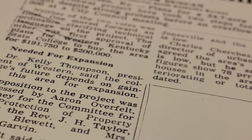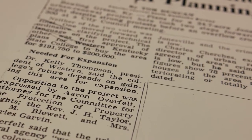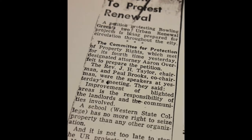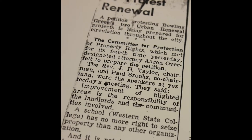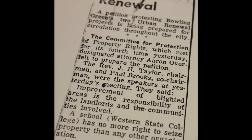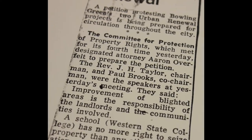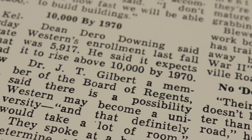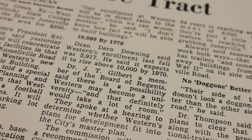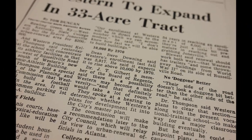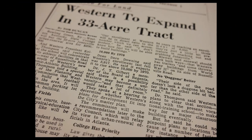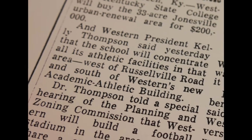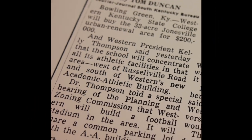On December 2, 1963, General Council gave the final approval for the project. Two months later, Western Kentucky State College president Kelly Thompson announced the college's intention to build a football stadium, a baseball field, tennis courts, and other facilities on the Jonesville property.